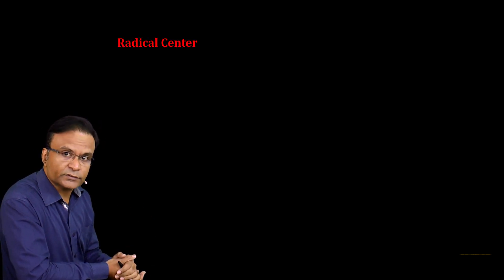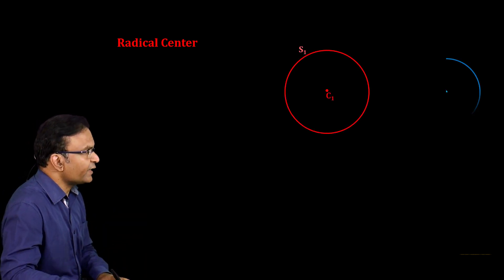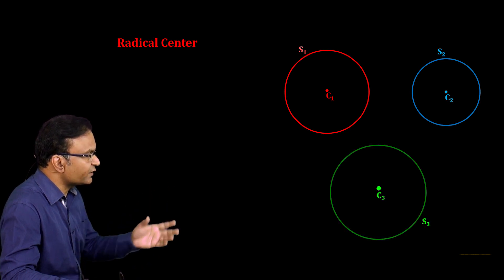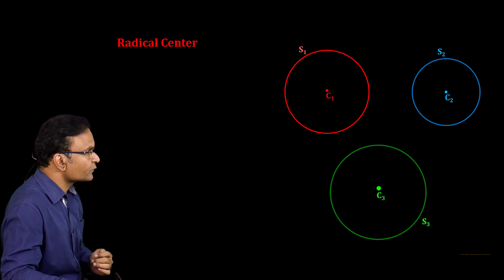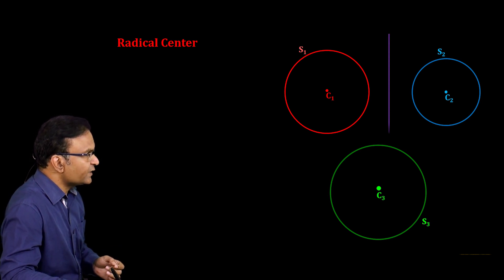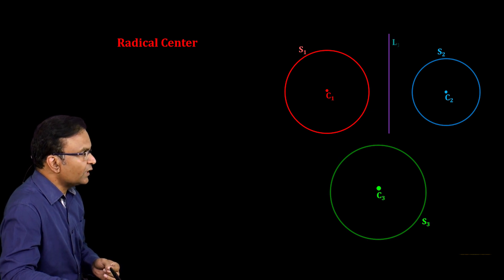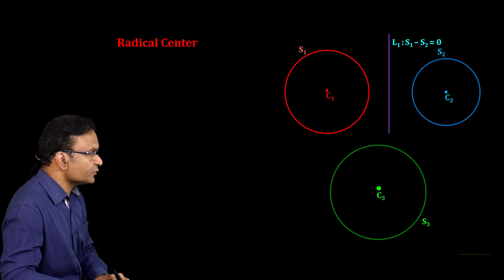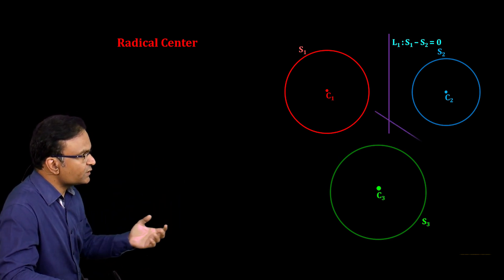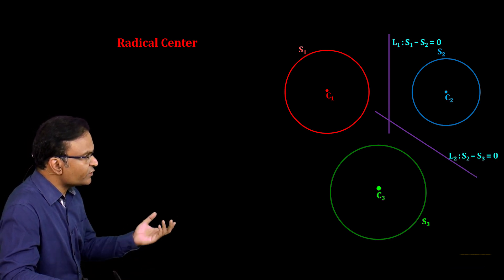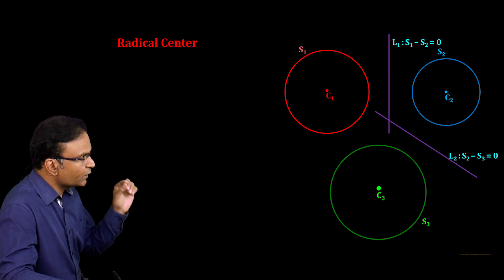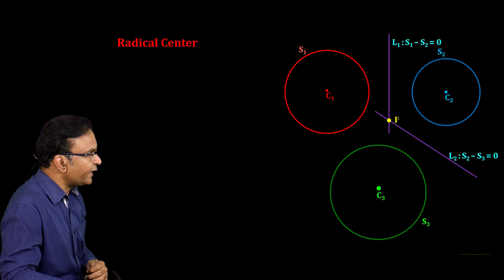Now let us see the radical center of three circles. When we have two circles we have a radical axis; when we have three circles, we have a radical center. Consider three circles S1, S2, and S3 with centers C1, C2, and C3 respectively. Draw the radical axis of circles S1 and S2, which is line L1 with equation S1 − S2 = 0. Draw the radical axis of circles S2 and S3, which is line L2 with equation S2 − S3 = 0. These two radical axes intersect at point P.